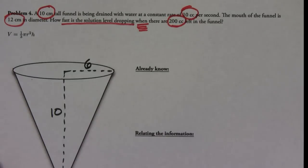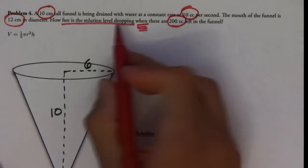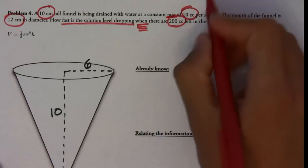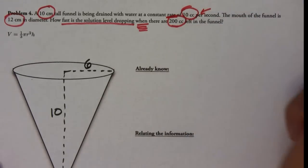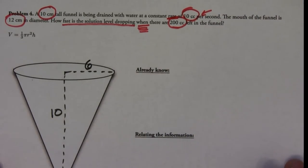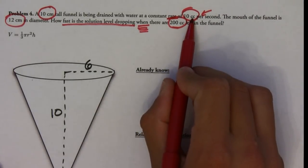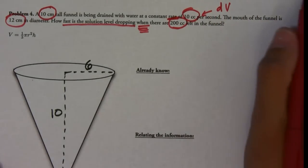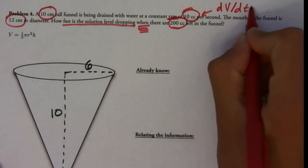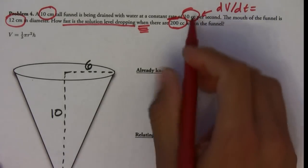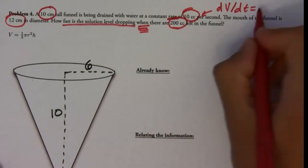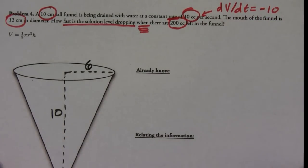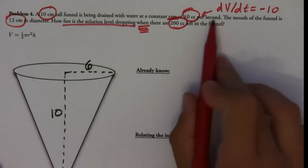The funnel is being drained with water at a constant rate of 10 cubic centimeters per second — this is talking about a rate. Cubic centimeters is a measure of volume, so that means the derivative of the volume with respect to time is equal to negative 10 cubic centimeters per second, since it's being drained.